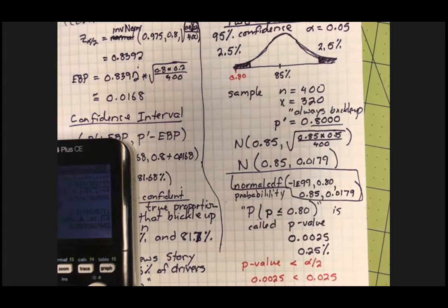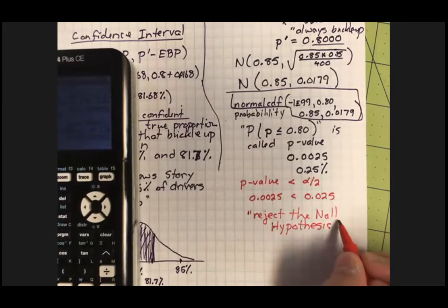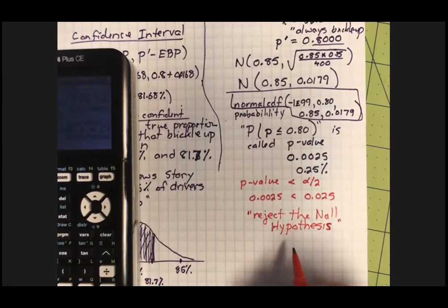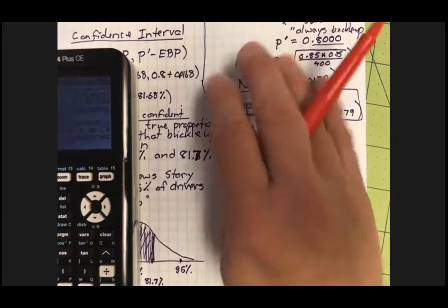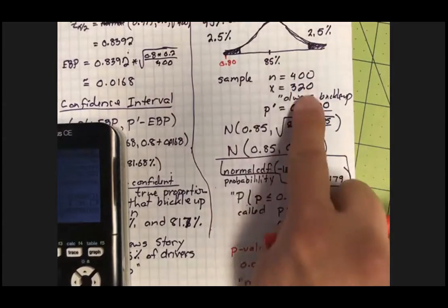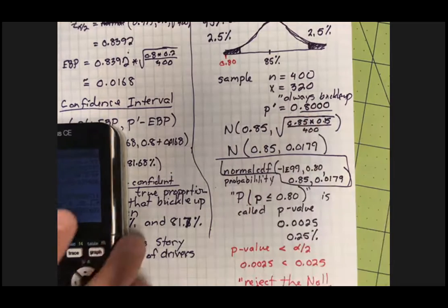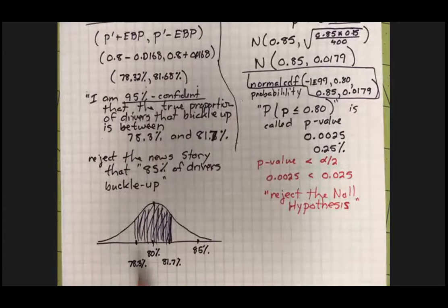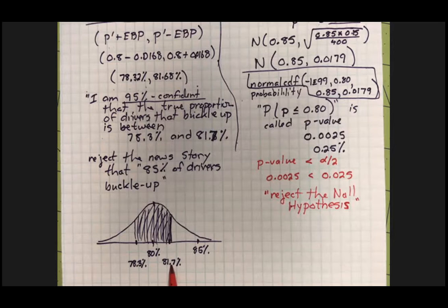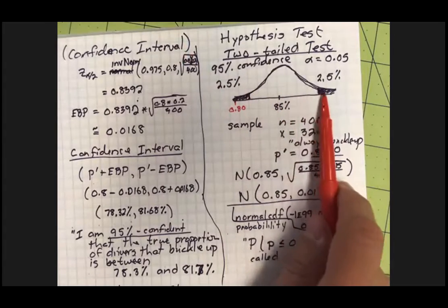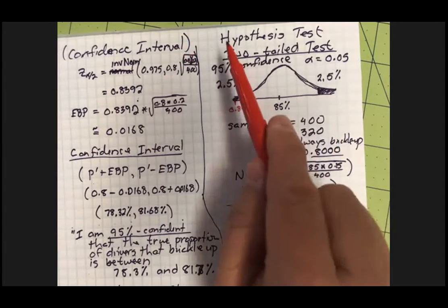Let's carefully consider what that means. To reject the null hypothesis means I think there's evidence that 85% of the people do not buckle up, because my survey was relatively large and only showed 80% of the people buckling up. Go back to my distribution on the confidence interval side — isn't that the same conclusion I came to there? My survey says that the people who always buckle up is between 78% and 82% roughly. I don't believe that story I read in the paper. This is the same experiment done in the language of a hypothesis test.